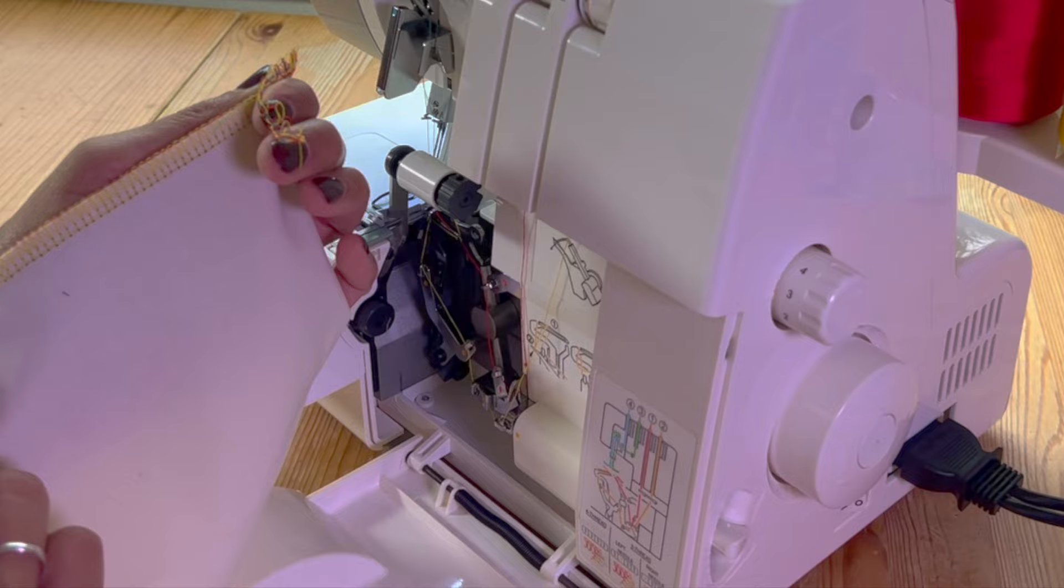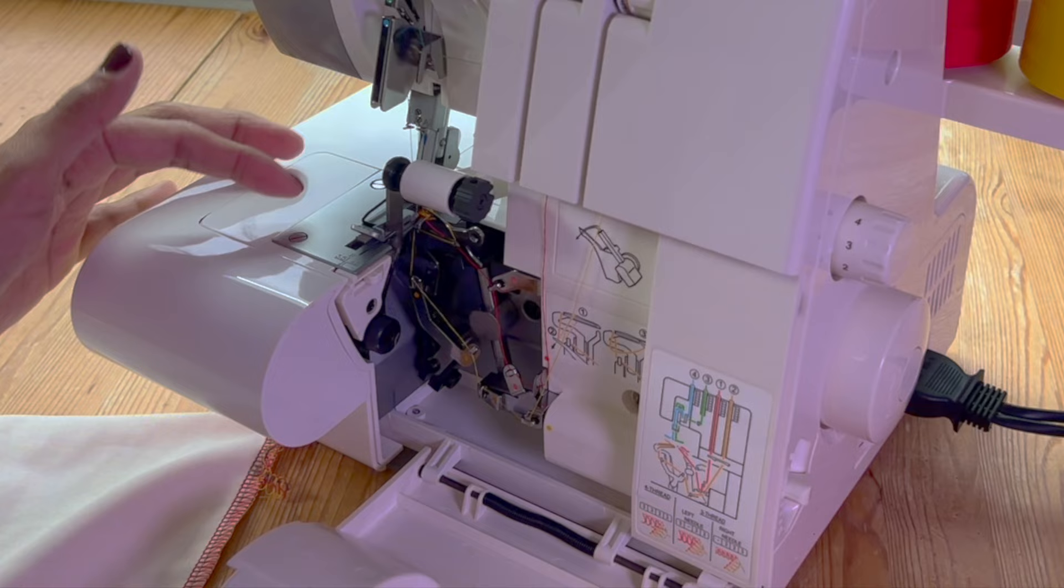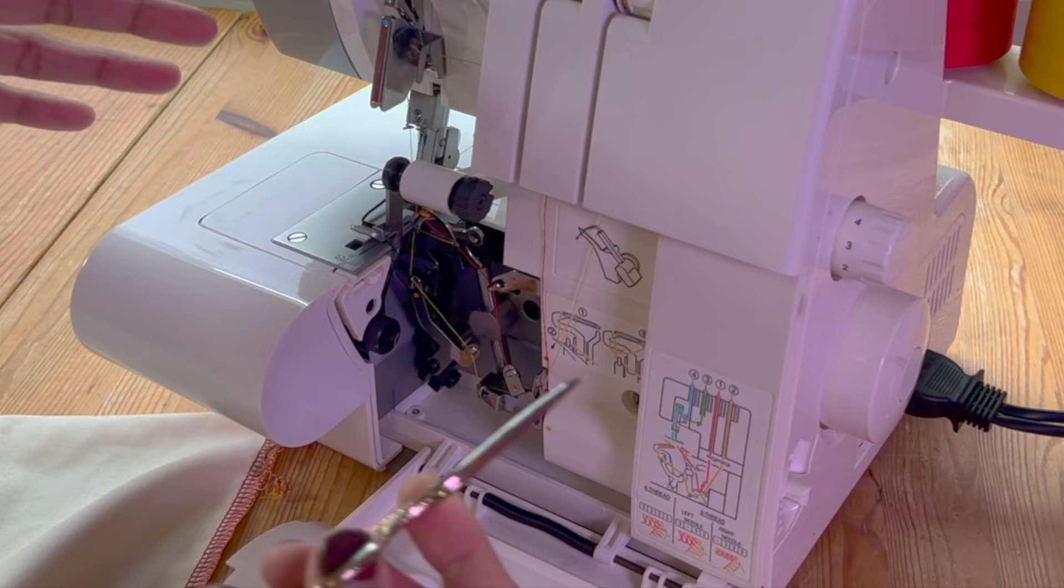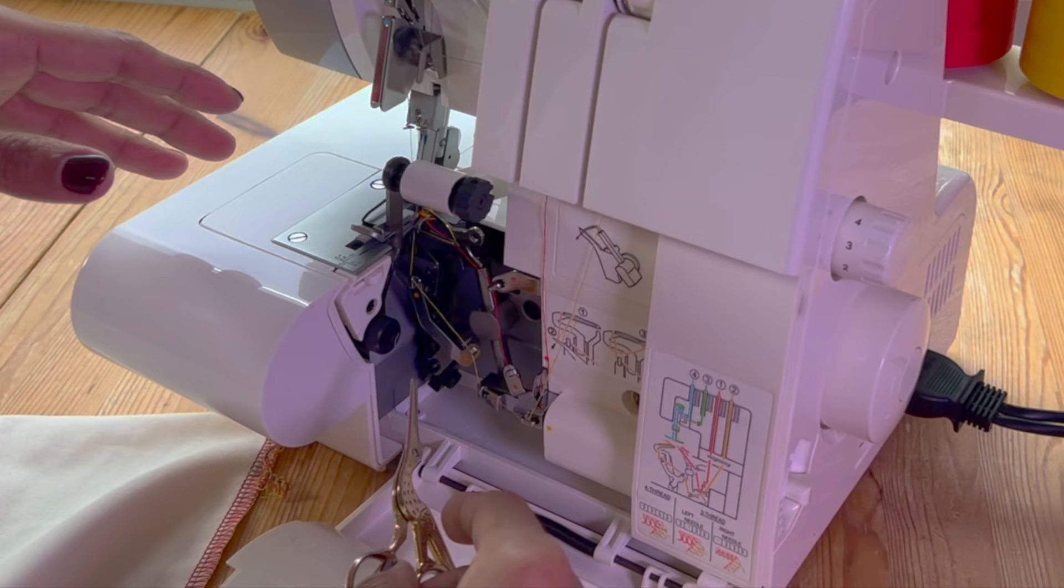That lower looper is a really tricky thread to feed. What happens is quite a lot of people will miss that thread. And when the thread jumps out while you're stitching, and it can do if your machine's dirty or fluffy, that thread comes out and then your tension goes completely out of whack.